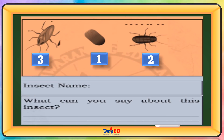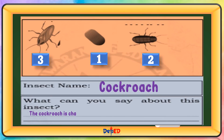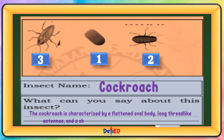Insect name: Cockroach. What can you say about this insect? The cockroach is characterized by a flattened oval body, long thread-like antennae, and a shining black or brown leathery integument.